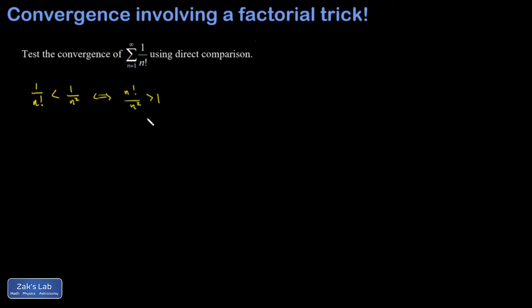We're going to try to show n factorial over n squared is greater than 1. At least if n is greater than some set point, we're going to hope that this is true from then on, which is all we need for the direct comparison.